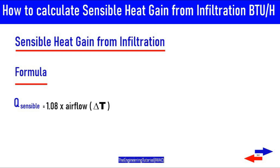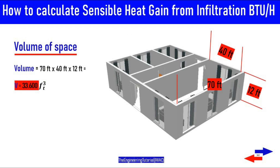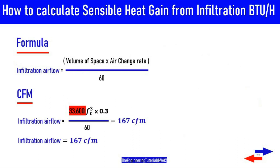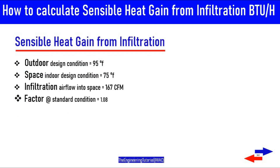The equation used to estimate the sensible heat gain from infiltration is Qs equals 1.08 times airflow times delta T. As in the previous example, we calculated an office space with a volume of 33,600 cubic feet, and after a simple calculation using the air change method that gave us an infiltration airflow of 167 CFM. For this example, the outdoor design condition is 95 degrees Fahrenheit and the indoor design condition is 75 degrees Fahrenheit.